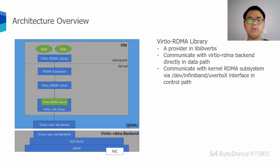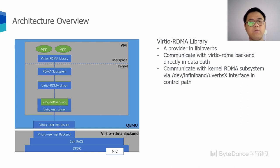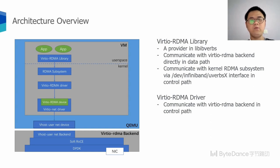Let me introduce the design and implementation of our solution. This is an overview of our virtual RDMA solution, including a virtual RDMA user space library, a virtual RDMA kernel driver, and a virtual RDMA backend in the host. The virtual RDMA user space library resides in the libibverbs library as a plugin. Libibverbs is a standard library for RDMA programming; it follows the InfiniBand architecture specification and the RDMA protocol verbs specification. The user-space process can use it to do RDMA data transfer without involving kernel space, but in the control path the library still needs to communicate with the kernel RDMA subsystem via the char device interface. The virtual RDMA kernel driver is mainly used in the control path, for example device initialization, creating virtual queues for data paths, and registering memory for data transfer.